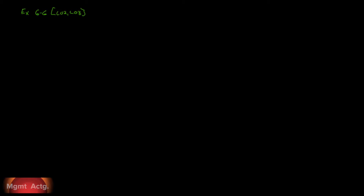We're going to do exercise 6.6. This is a long one. It gives us a chance to see the entire production report. Exercise 6.6 will bring us through learning objective 2 and learning objective number 3. Equivalent units and cost per equivalent units — that's part 1 and part 2 of the production report, but we're going to go ahead and do part 3 of it as well to see what it looks like.